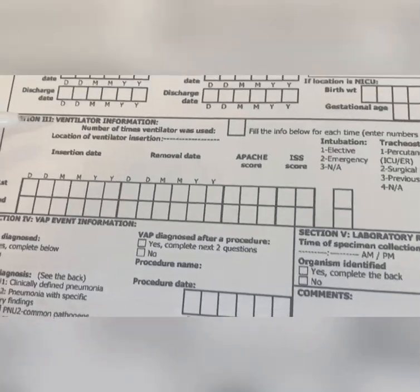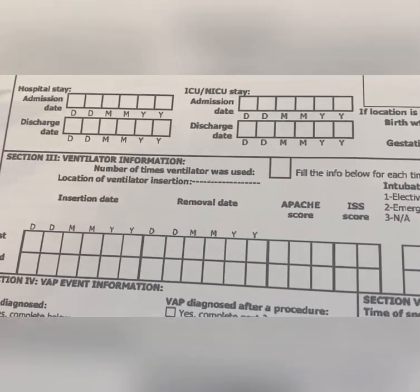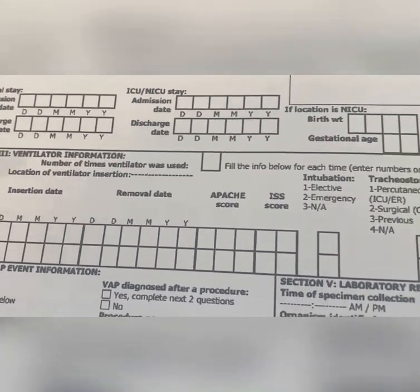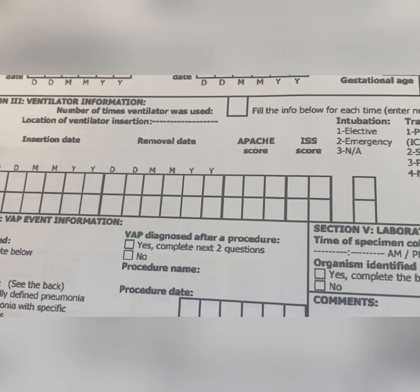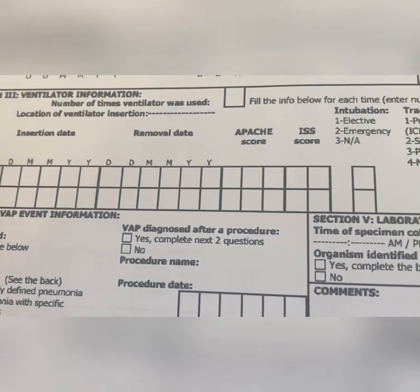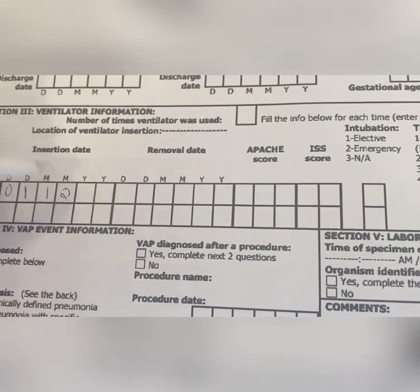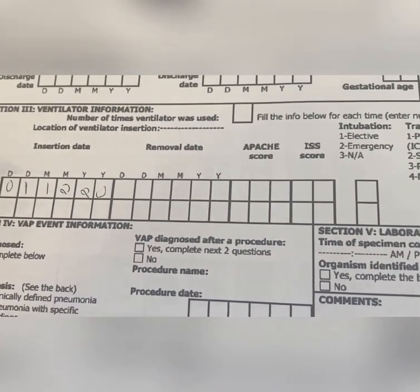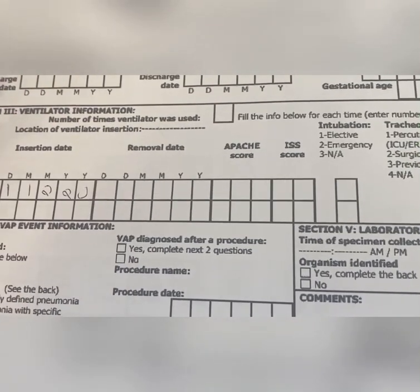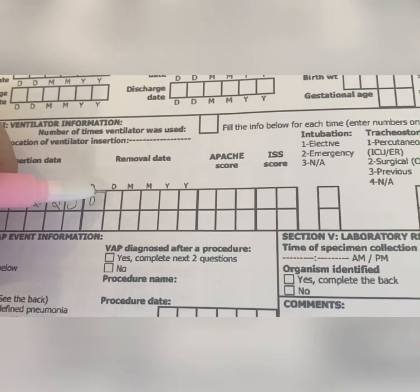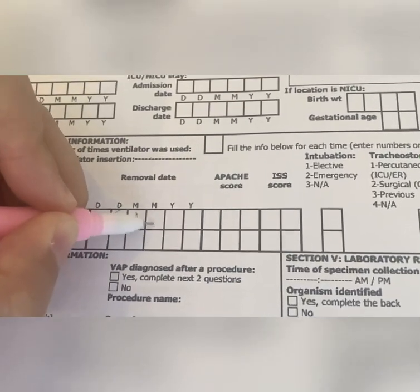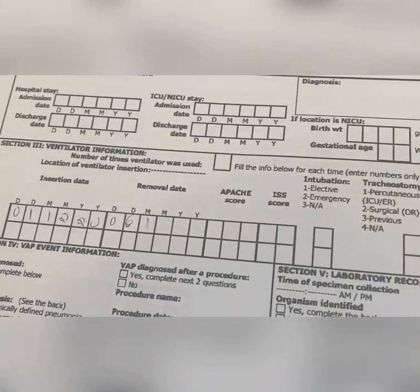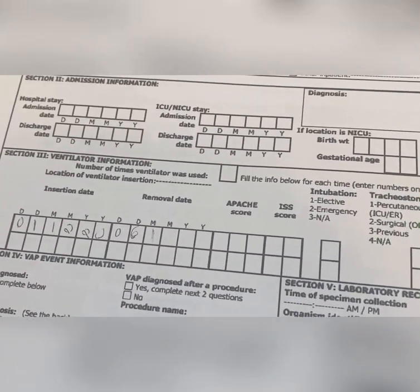Section three is ventilator information: how many times the ventilator was used, number of times it was used, and you need to fill in the insertion date — day, month, and year. For example, date 01, month 12, year 2020. Then when the ventilator was removed — for example, after six days, you write date 06, month 12, year 2020.